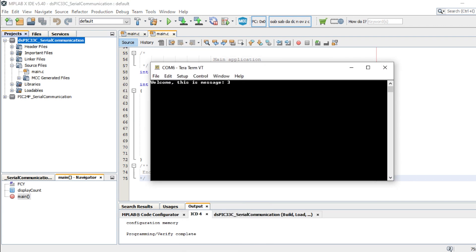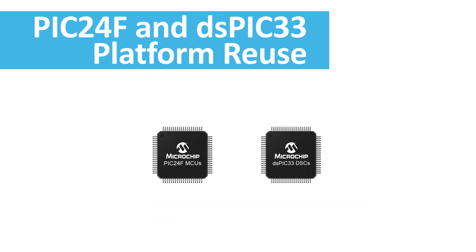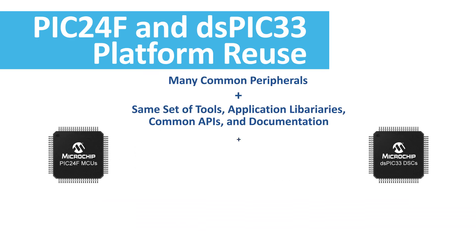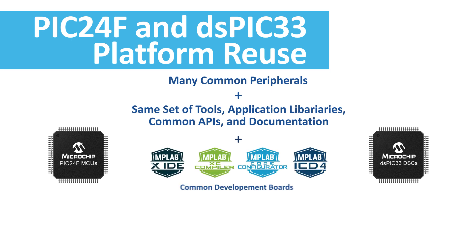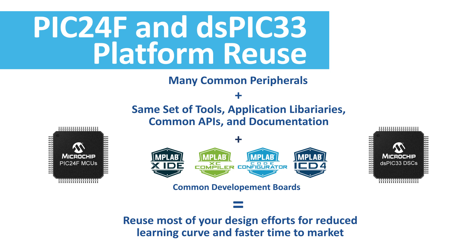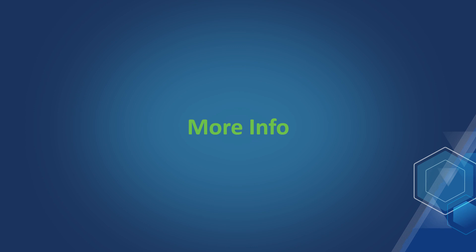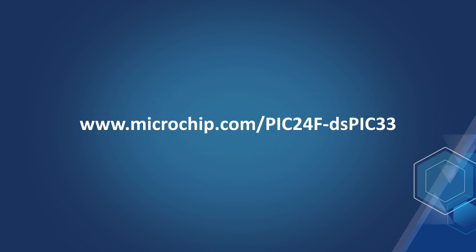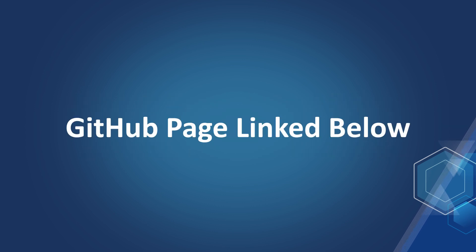Sharing the same application libraries and common development ecosystem, the low-power PIC24F MCUs and the robust dsPIC33 DSCs offer a wide range of performance and enable the addressing of different functions in a complete platform design. The PIC24F MCUs and the dsPIC33 DSCs also enable easy migration while repurposing most of your development efforts. To learn more, please visit microchip.com/PIC24F-dsPIC33. You can also download the code example shown in this video from the GitHub page linked in the description below.